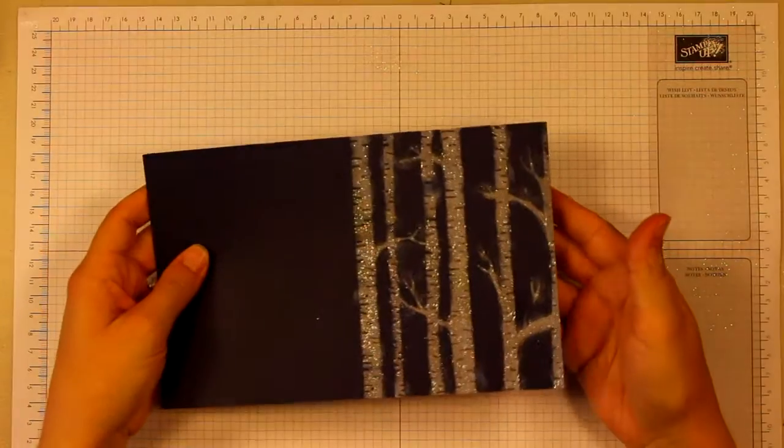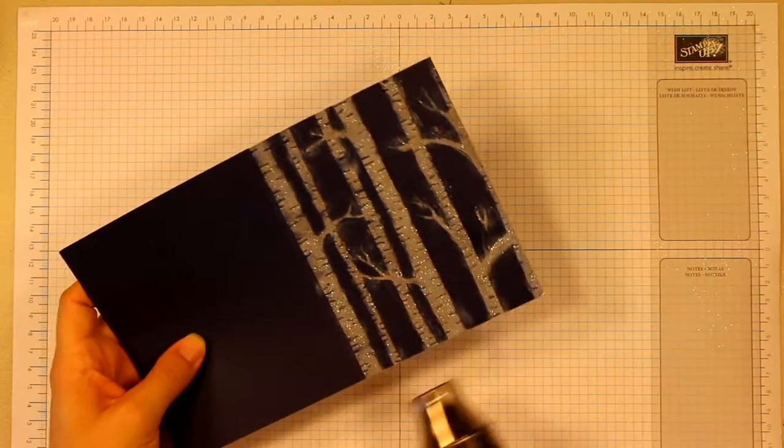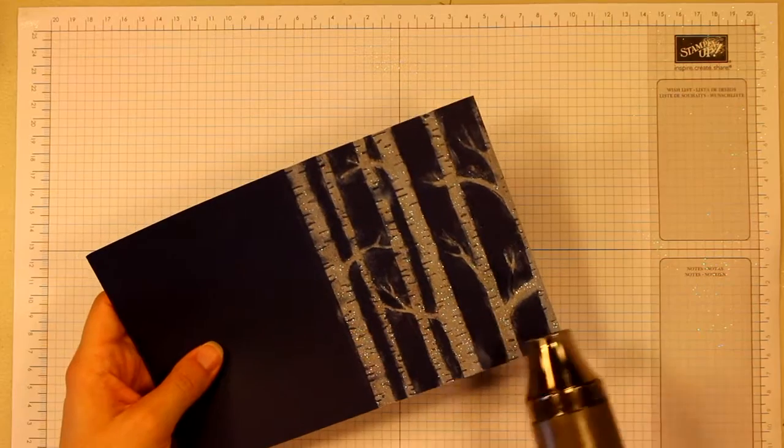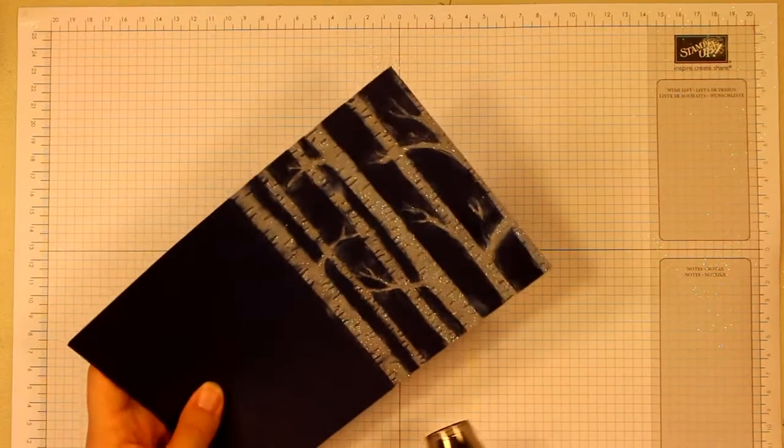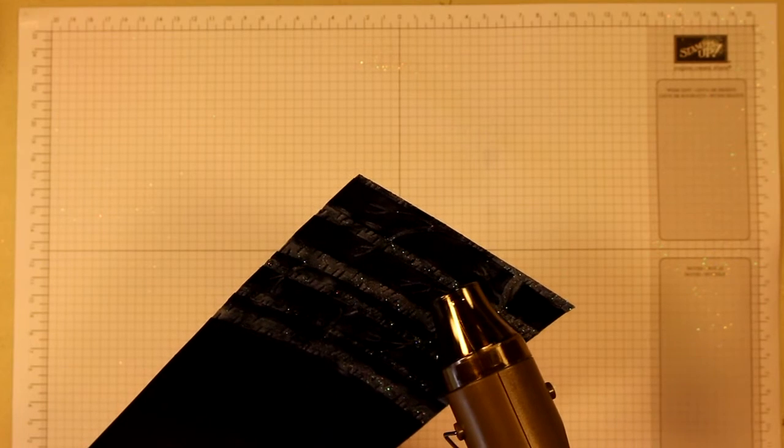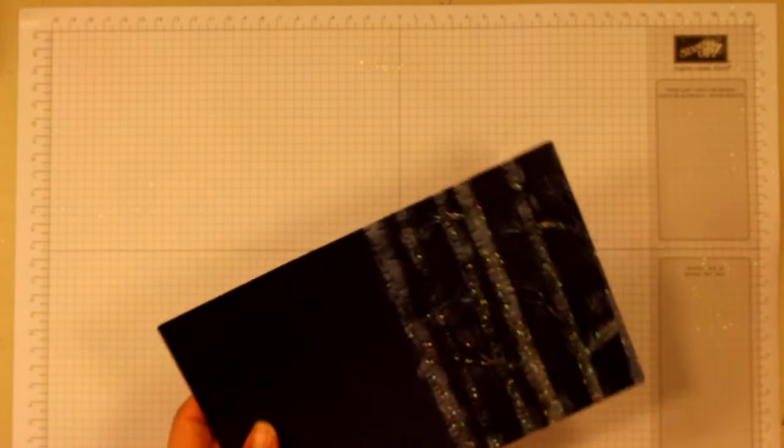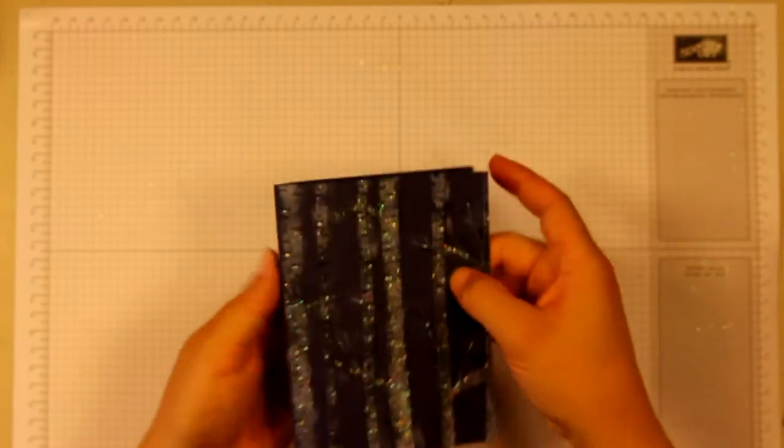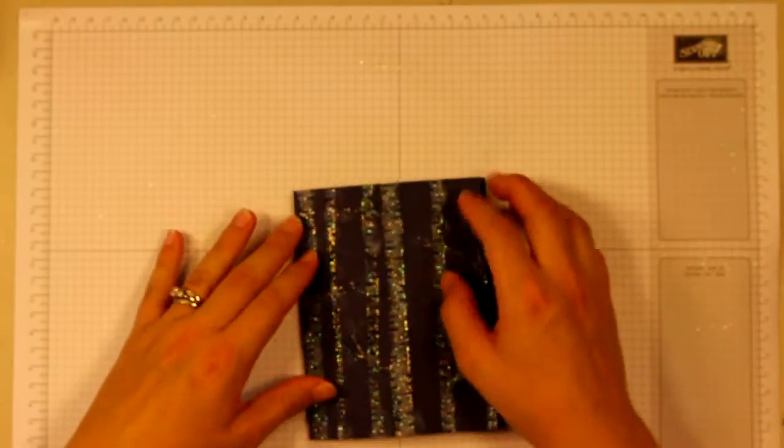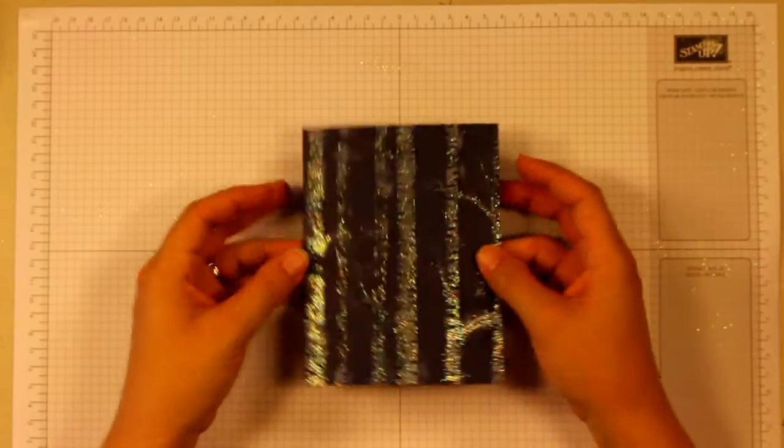So I got that done, here is what it looks like and now I'm going to use my heat tool to heat it up and heat set all of that embossing powder. All right, so there is that much and I just think that is beautiful.